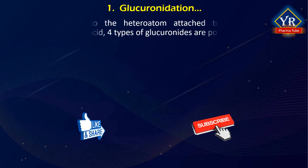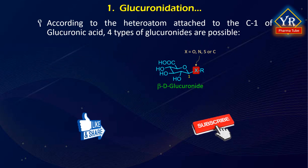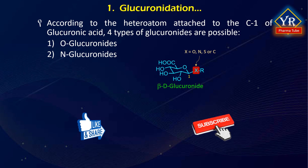According to the heteroatom attached to the C1 atom of the glucuronyl group, four types of glucuronides are possible: O-glucuronides, N-glucuronides, S-glucuronides and C-glucuronides.